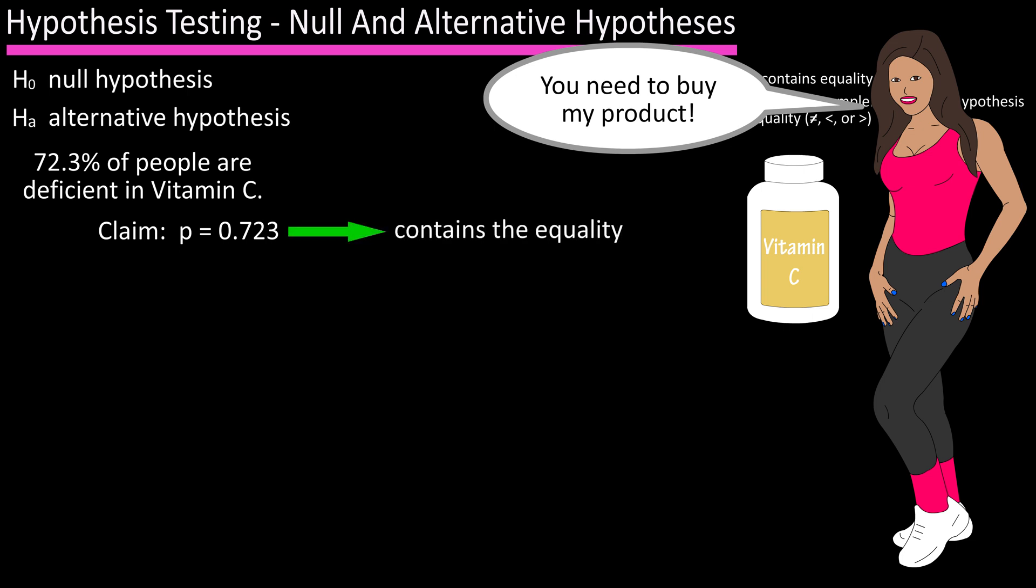The null hypothesis contains the equality so H sub zero is p equals 0.723, and the alternative hypothesis is the complement of the null hypothesis and contains the inequality. So H sub a is p does not equal 0.723.